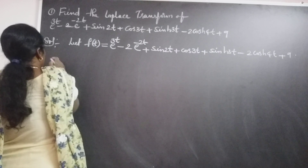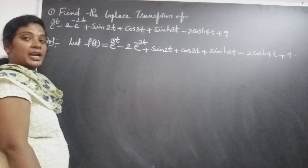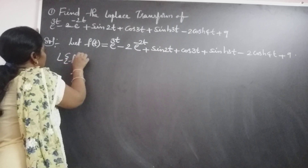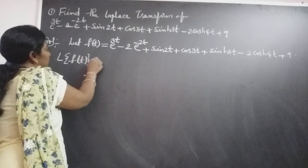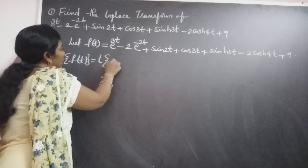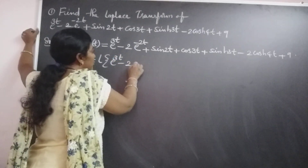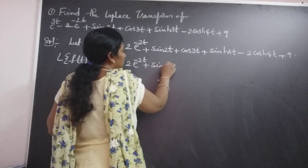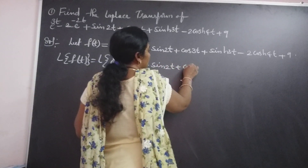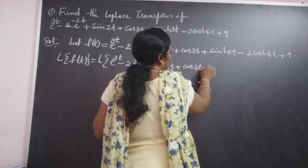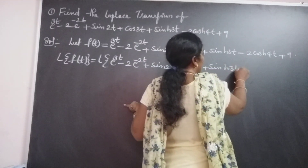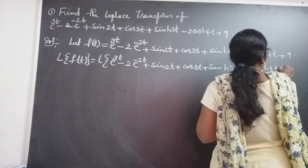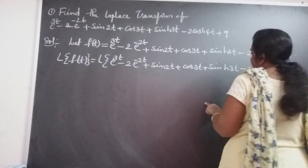In this we can take the Laplace transform by using the linearity property. L of f of t is equal to L of e power 3t minus 2e power minus 2t plus sin 2t plus cos 3t plus sinh 3t minus 2 cosh 4t plus 9.